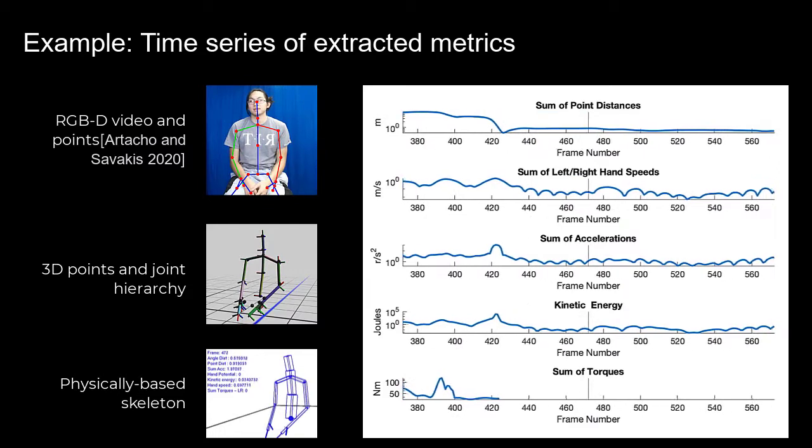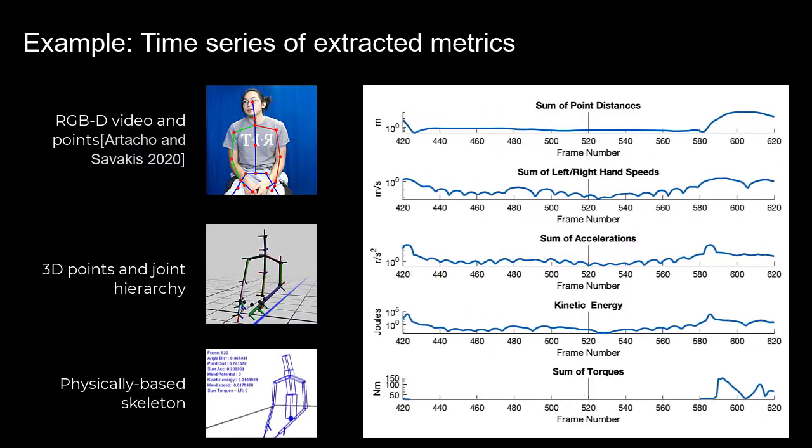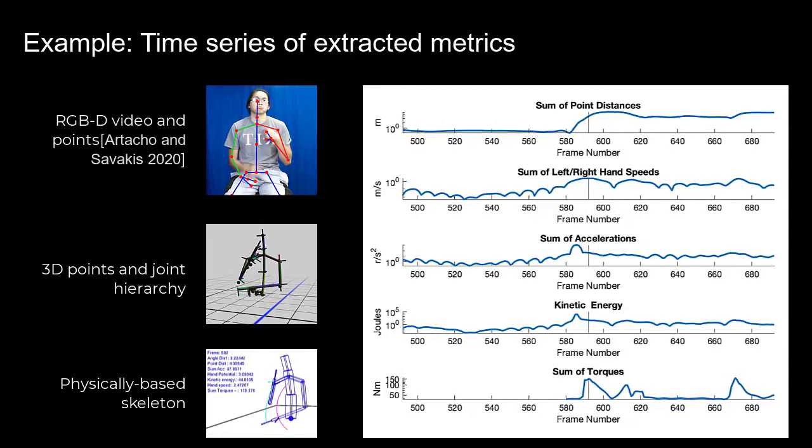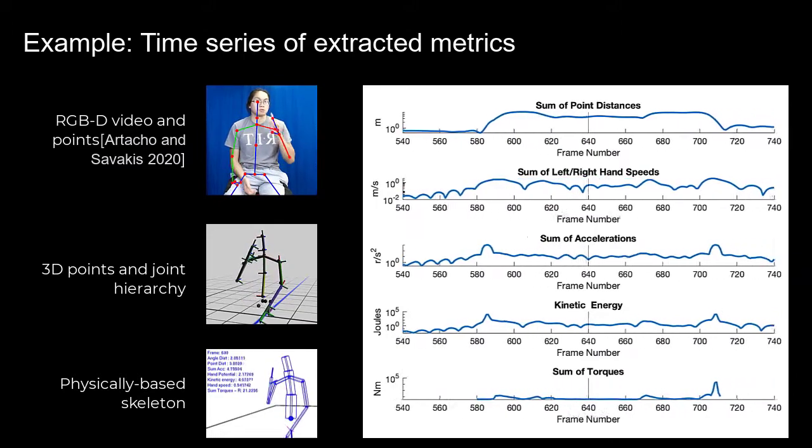This set of plots shows how several metrics vary over time. These metrics are lowest when both hands are resting in the lap. Highest values correspond to frames with large acceleration.